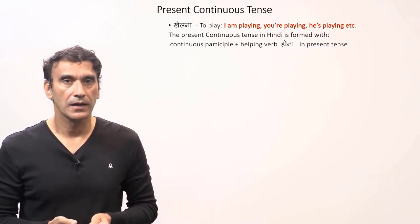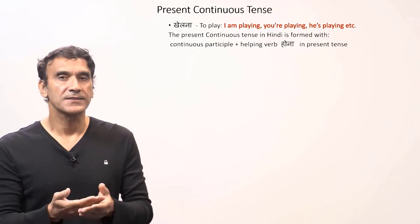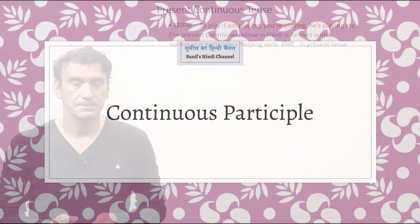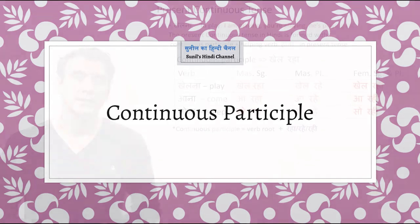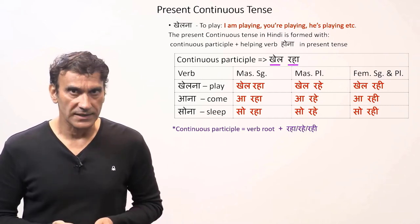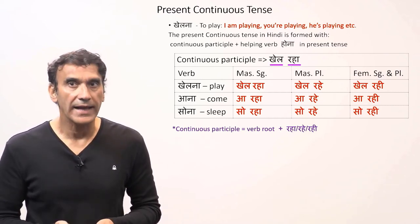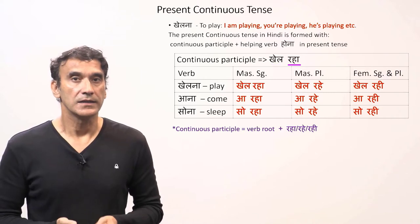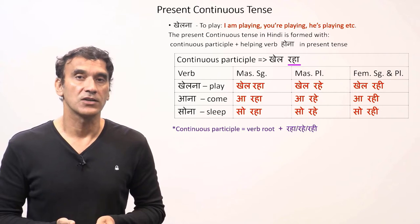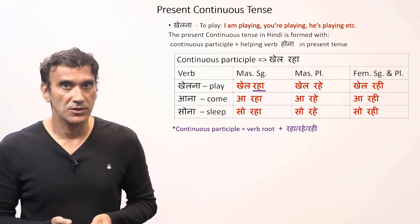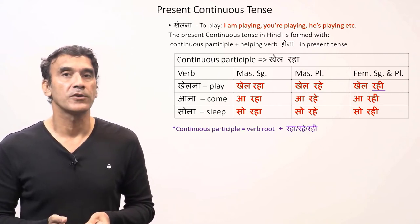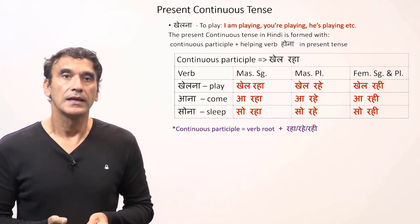Before we take the present continuous tense, let's first learn how to make the continuous participle. The continuous participle is a two-word participle: the first word is the root of the verb, and the second word is 'raha'. The second word 'raha' changes according to number and gender. 'Raha' is the masculine singular form.